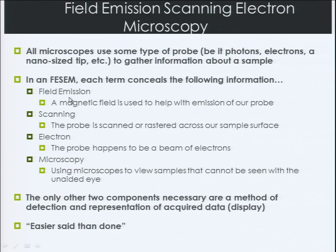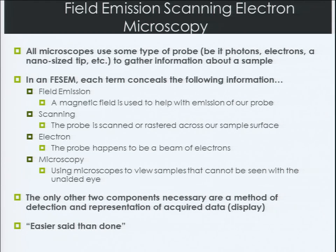Field Emission tells us that we're going to use a magnetic field to help emit our probe. The scanning term tells us that the probe will be scanned or rastered across the sample surface. The electron term tells us that the probe is actually an electron. And microscopy just tells us that it's going to allow us to view small things we couldn't resolve with the unaided eye. The only two other components needed are a detection system and a display, which are actually quite complicated as well.